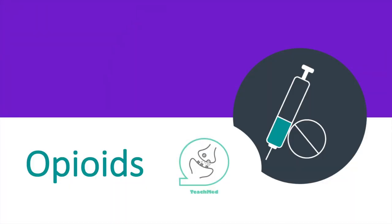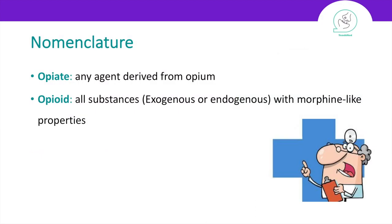Hello everyone, this is TeachMed channel and I'm Sarah. In today's video we will talk about opioids and it's going to be divided into two parts. In the first part we will discuss the mechanism of action, clinical uses and side effects. But first we need to distinguish between the word opiate, which means any agent derived from the plant opium, and opioid — all other substances either exogenous or endogenous that give you morphine-like properties.